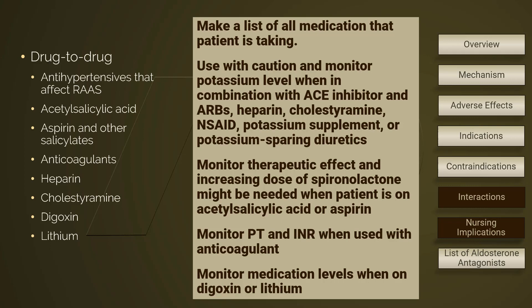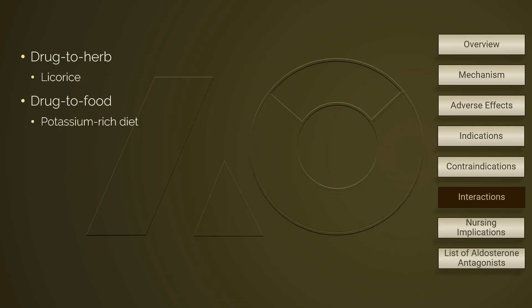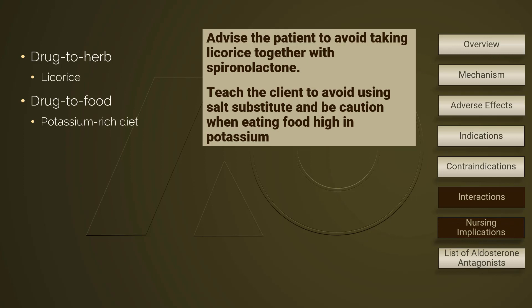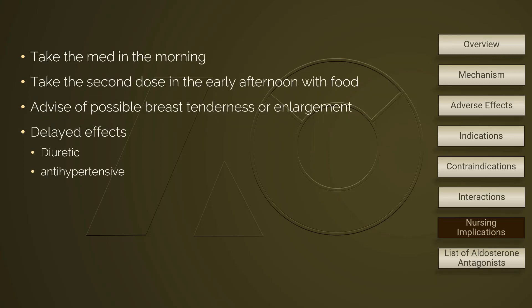Regarding drug-to-herb and drug-to-food interactions: licorice has an aldosterone-like effect, and using licorice with spironolactone may block ulcer healing and increase the risk of hypokalemia. A potassium-rich diet — such as salt substitutes, citrus fruits, and tomatoes — increases the risk of hyperkalemia. Nursing care includes advising the patient not to take licorice together with spironolactone, monitoring potassium levels routinely, and teaching the patient how to avoid hyperkalemia through proper diet.